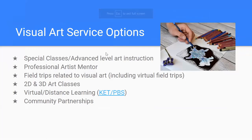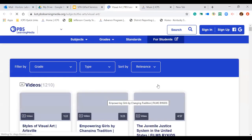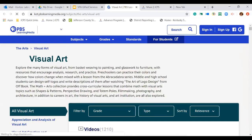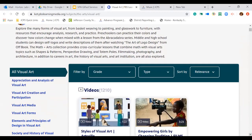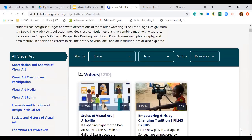For the area of visual art, for those students who have been identified in visual arts, some service options could be special classes or advanced level art instruction, a professional artist as a mentor, field trips related to visual art — including virtual field trips — 2D and 3D art classes, virtual or distance learning opportunities, and community partnerships in the visual arts. KET offers visual and performing arts material online courses that students could participate in. If you look over to your left, there is a whole strand of different areas in visual art that students could have online access to.